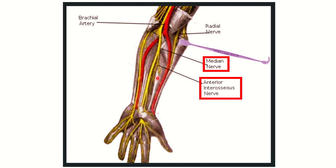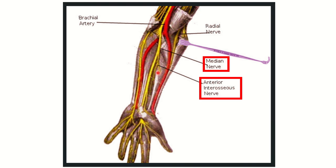Anterior interosseous nerve — this anterior interosseous nerve, it arises from this nerve. And if we go back, this nerve — this is the median nerve. So the anterior interosseous nerve is arising from the median nerve and supplies some of the muscles of the forearm.